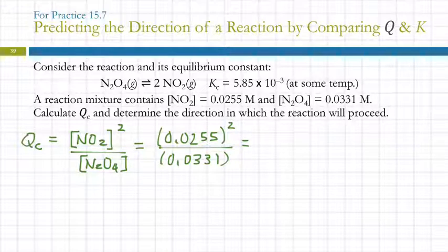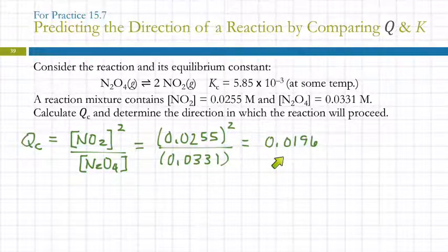0.0255 squared divided by 0.0331 equals... So the value of the quotient is 0.0196. Did I do that right?